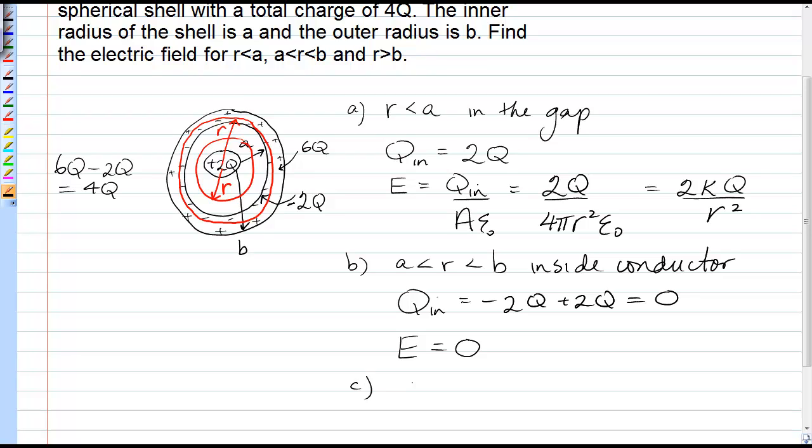Okay, now we're going to go right outside everything. We're going to go for r greater than b. So now our Gaussian surface is out here, radius r once again. And now I have to add up all the charge inside that large Gaussian surface.